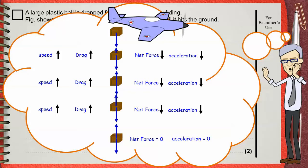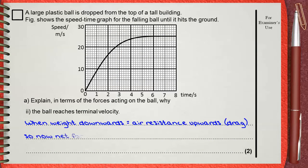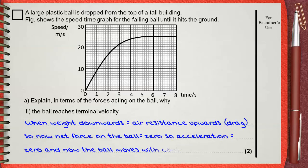You can say this as: when weight downwards equals air resistance upwards, which is the drag, the net force on the ball equals zero. So acceleration equals zero, and the ball moves with constant speed.